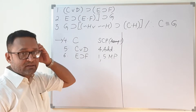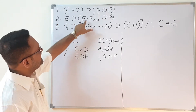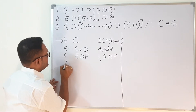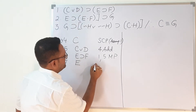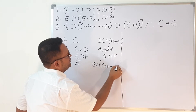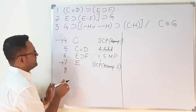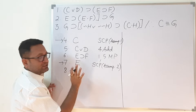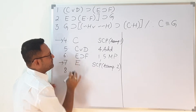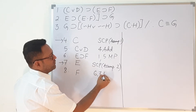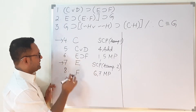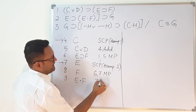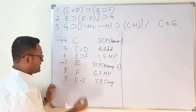From here we cannot directly enter the next line, but if we take E and create E implies F, we can reach G. So I need to take another assumption. The second assumption is E — SCP assumption 2. On line number 8, this loop is open so I can use all the premises. With E and line 6, I get F by modus ponens — lines 6 and 7. On line 9, I make E·F, which is lines 7 and 8 by conjunction.